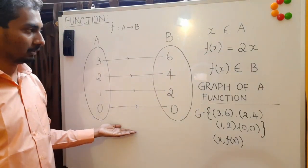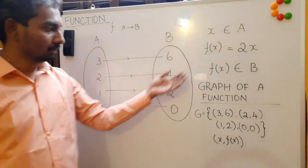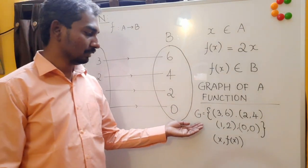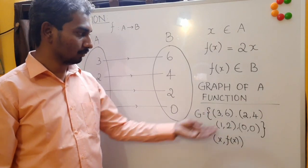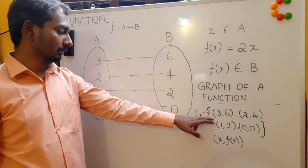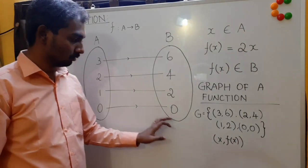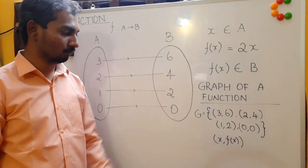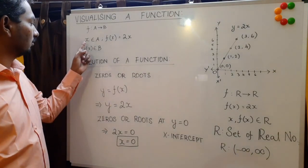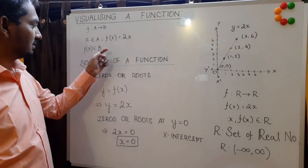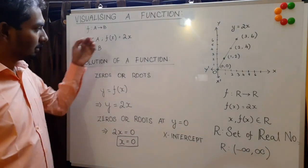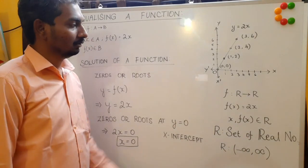If you collect all these values as ordered pairs, such a set is called the graph of a function. The graph of a function G is a collection of elements X and F(X) collected together: 3 and 6, 2 and 4, 1 and 2, 0 and 0 — collected as ordered pairs. This is the graph of a function. This is a visualization of the previous function where F is defined over set A to B, and for every element X in A, the relation is F(X) = 2X.